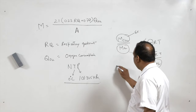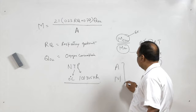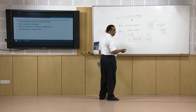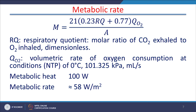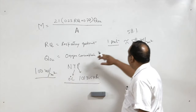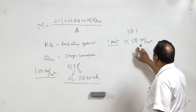In a human body we can calculate the surface area and the metabolic rate. Normally, for a sedentary activity — suppose somebody is sitting on a chair doing nothing — the metabolic heat evolved from the body is 100 watts. Dividing this by the surface area gives a heat flux of approximately 58 watts per meter square, and this is known as 1 met. Metabolic rate is expressed in terms of met, and 1 met is approximately 58 watts per meter square.